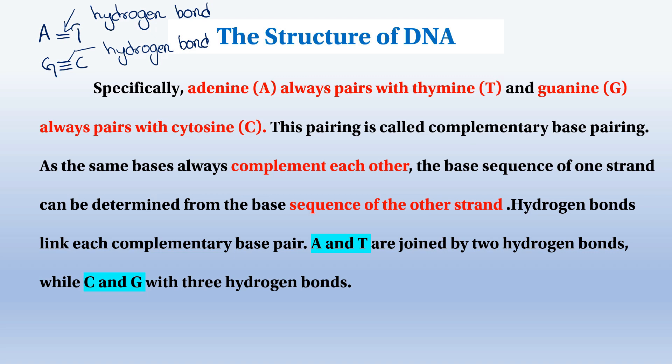A and T are joined by two hydrogen bonds, while C and G are joined by three hydrogen bonds.